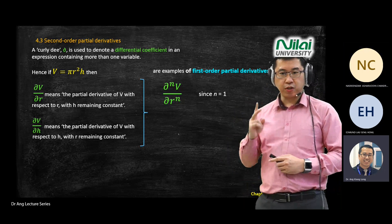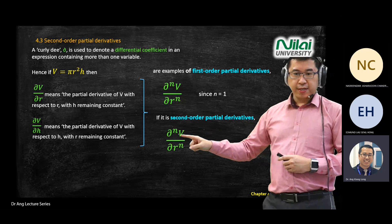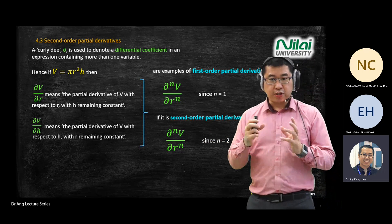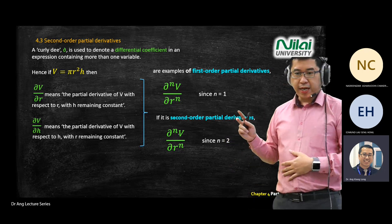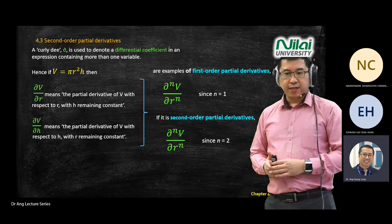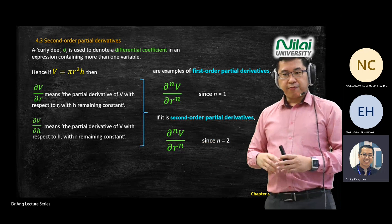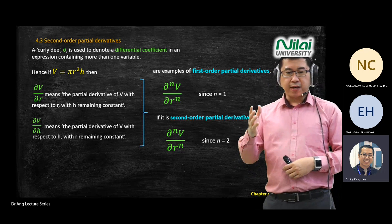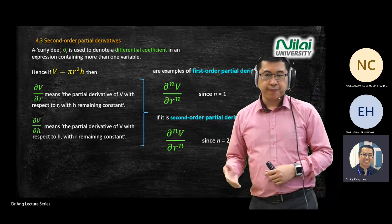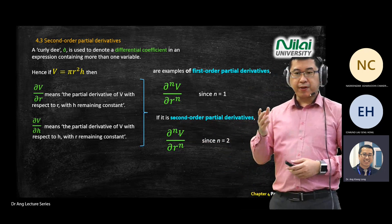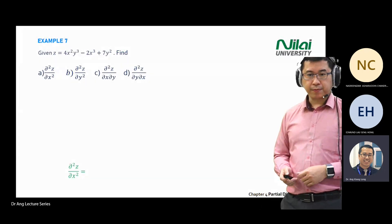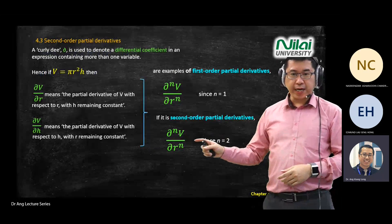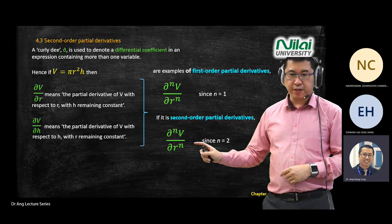You do differentiation two times. Today we're going to look at this. Since we keep repeating the differentiation concept, you'll be able to go faster in this session. Before this, we gave you a lot of tables with direct answers from the general equation of differentiation, and even integration also. So you can make full use of that table. Now let's look at second-order partial derivatives, n equals 2.